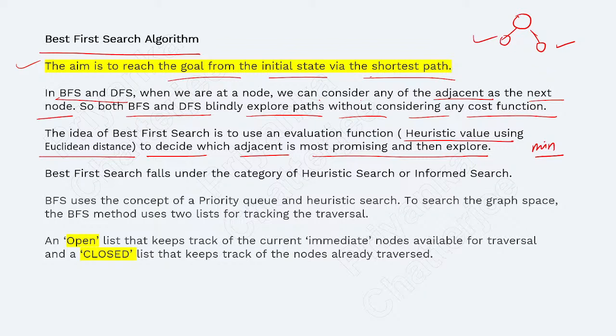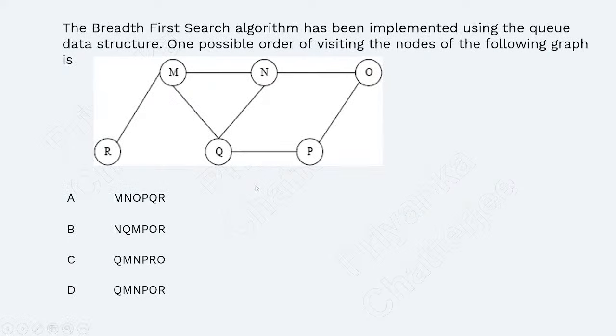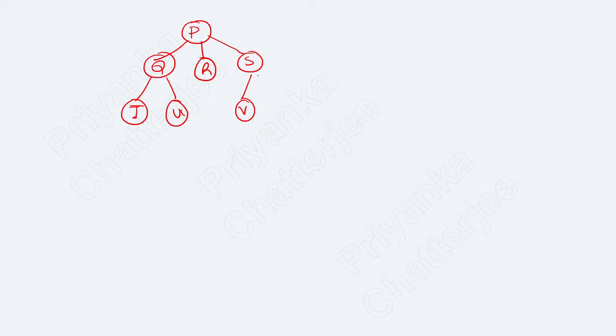Best first search uses an open queue and a closed queue — the open queue is implemented as a priority queue ordered by heuristic value. I am taking an example with nodes P, Q, R, S, T, U, V, W, X, and Y, where heuristic values are assigned to each node. When the heuristic value is 0 that means it is the goal node.